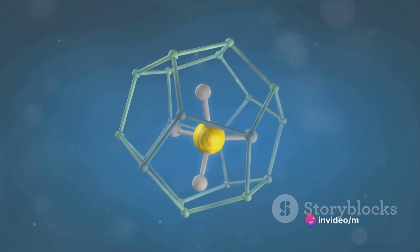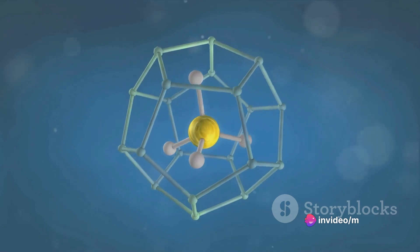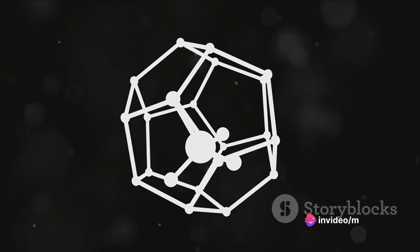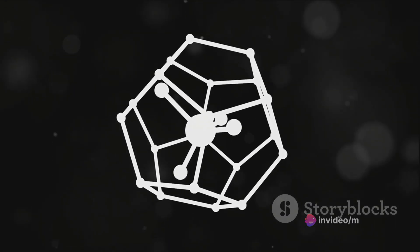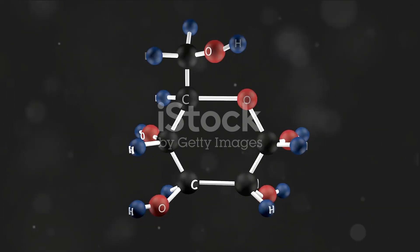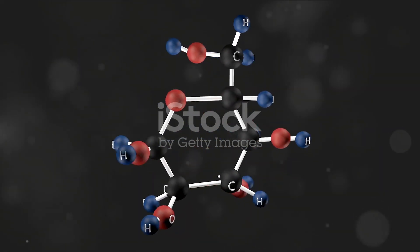Take methane, the primary component of natural gas. It has a simple structure with one carbon atom bonded to four hydrogen atoms. On the other hand, complex carbohydrates like cellulose, found in plant cell walls, involve lengthy chains of sugar molecules linked together.